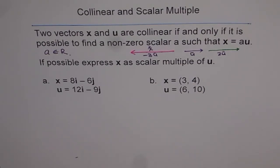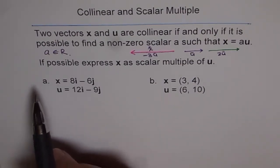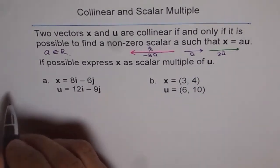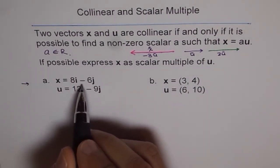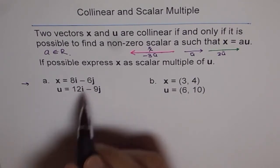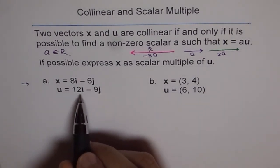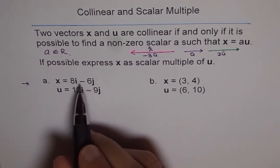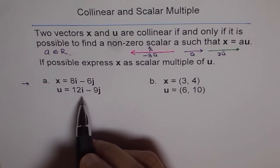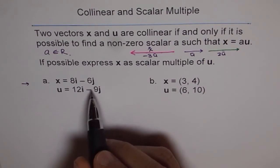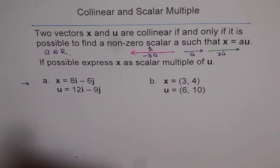The condition for two vectors to be collinear is that they can be written as scalar multiples of one another. Now the next question: if possible, express x as a scalar multiple of u. Here x equals 8i minus 6j, where i and j are unit vectors along the x and y axes, and u is given as 12i minus 9j. If they are scalar multiples, then one vector can be written as a scalar multiple of the other.